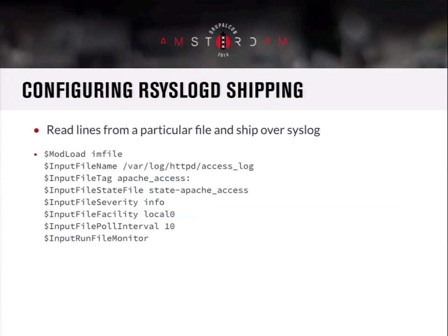You can also use rsyslog to ship a file. If you wanted to ship the default Apache access log to another machine, you use the imfile extension for rsyslog — which probably comes out of the box in your distro. You can tell it the input filename and what tag to give it. This tag will end up as the program field that shows up on the remote side, since syslog logs have a program field. You can also control the severity and facility, how often it should be polled, and enable the file monitor.